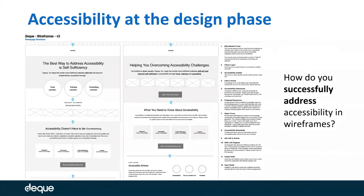Over the past year, we underwent a redesign of our brand and our site. Doing what we do, we had to make sure that everything would be as accessible as we could make it. From the very beginning of the process, working with the agency that developed the site for us, we wanted to make sure accessibility would be factored in from the start. What's on screen right now is an example of one of the wireframes initially created to demonstrate what the homepage could look like.